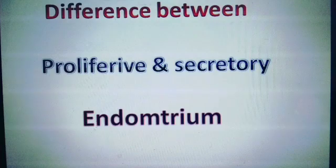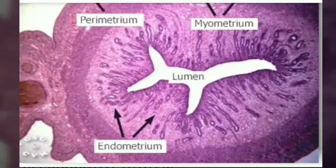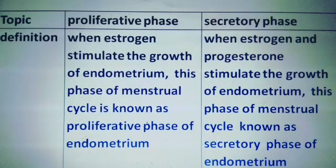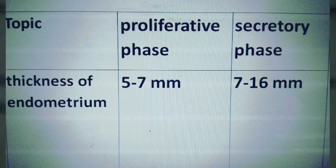The difference between proliferative and secretory endometrium. The endometrium is the innermost histological structure of the uterus; its thickness and structure vary according to the different phases of the menstrual cycle. The proliferative phase is controlled by estrogen, which increases the thickness of the endometrium. The secretory phase is controlled by both estrogen and progesterone, and the thickness is more — up to 16 millimeters.